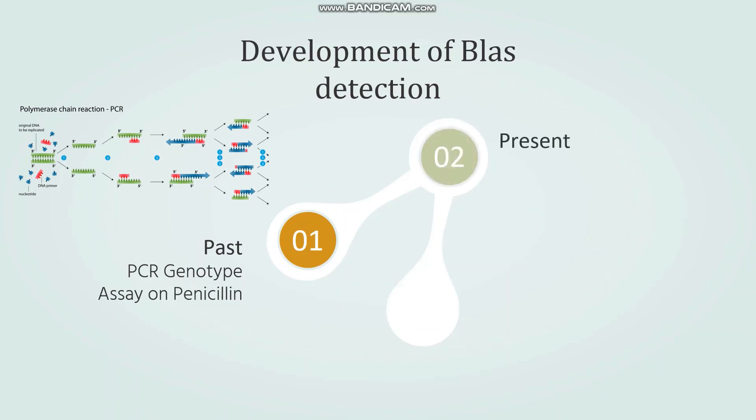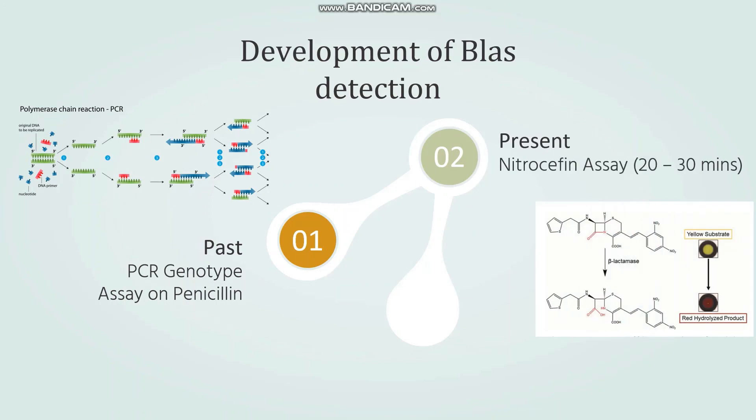Currently, the most common way is nitrocefin assay, which uses a compound that has a color change after hydrolysis of this beta-lactam ring. This method is quick and efficient without having the need for much sample preparation. This is the reason why it is being used predominantly now.